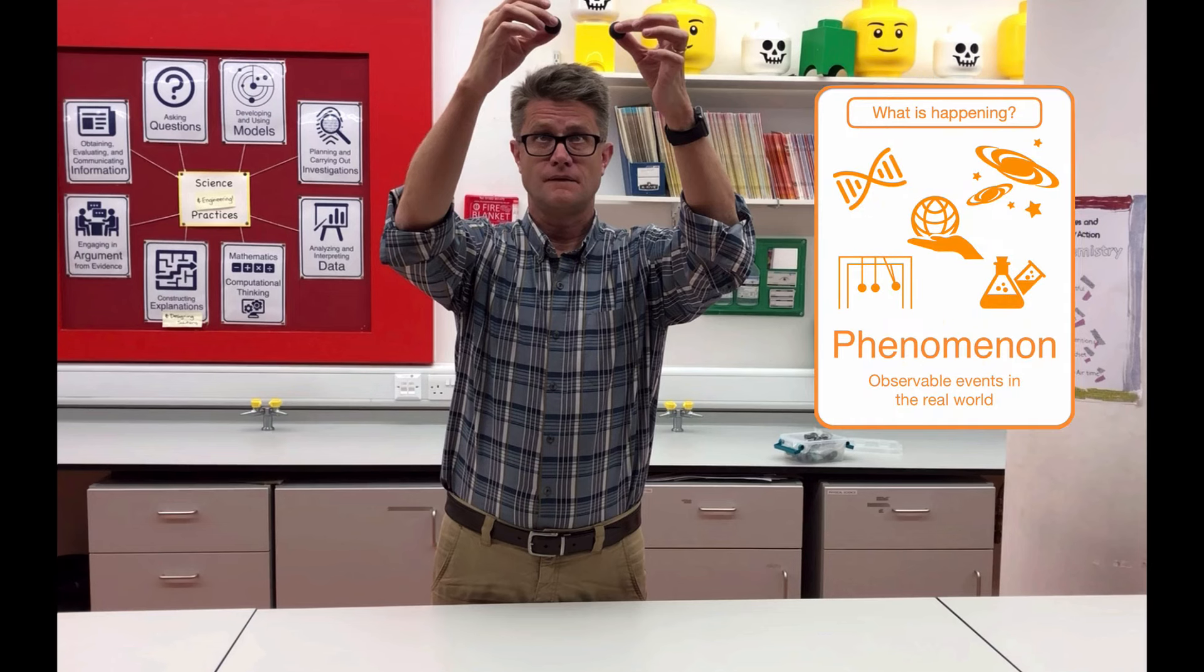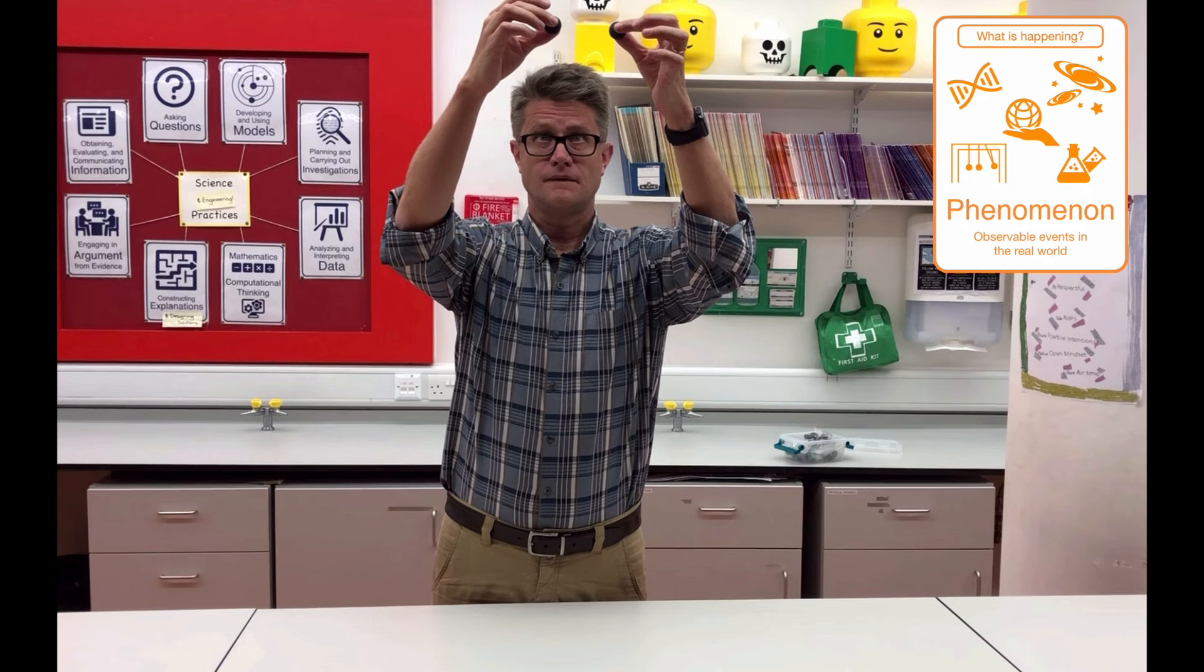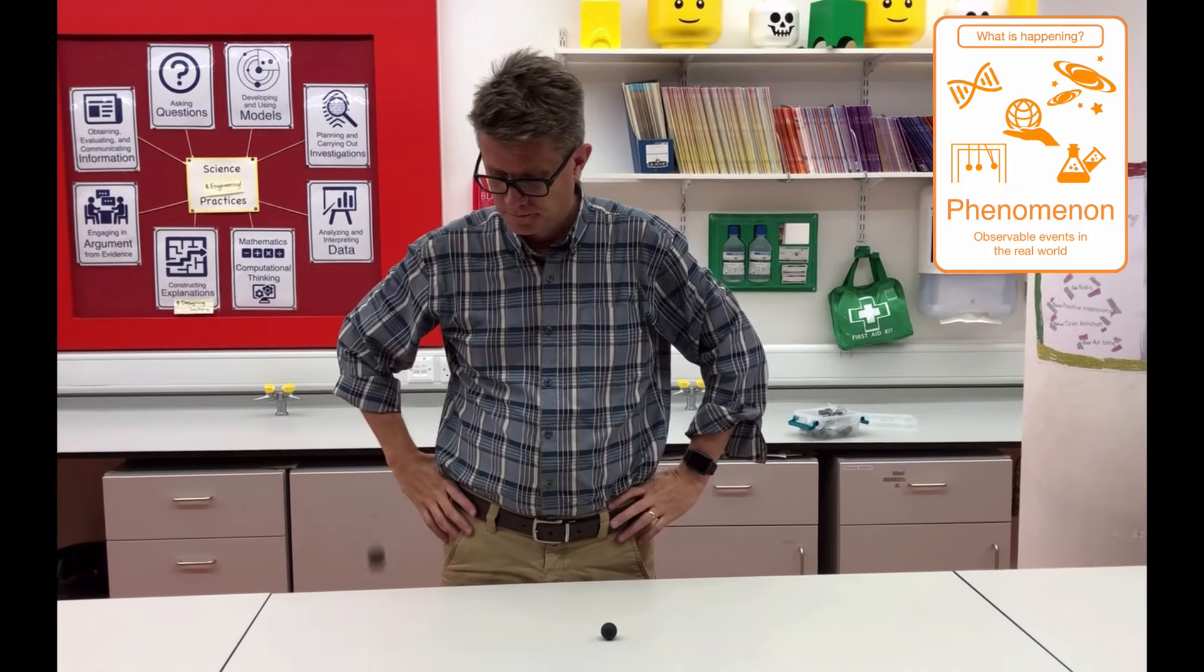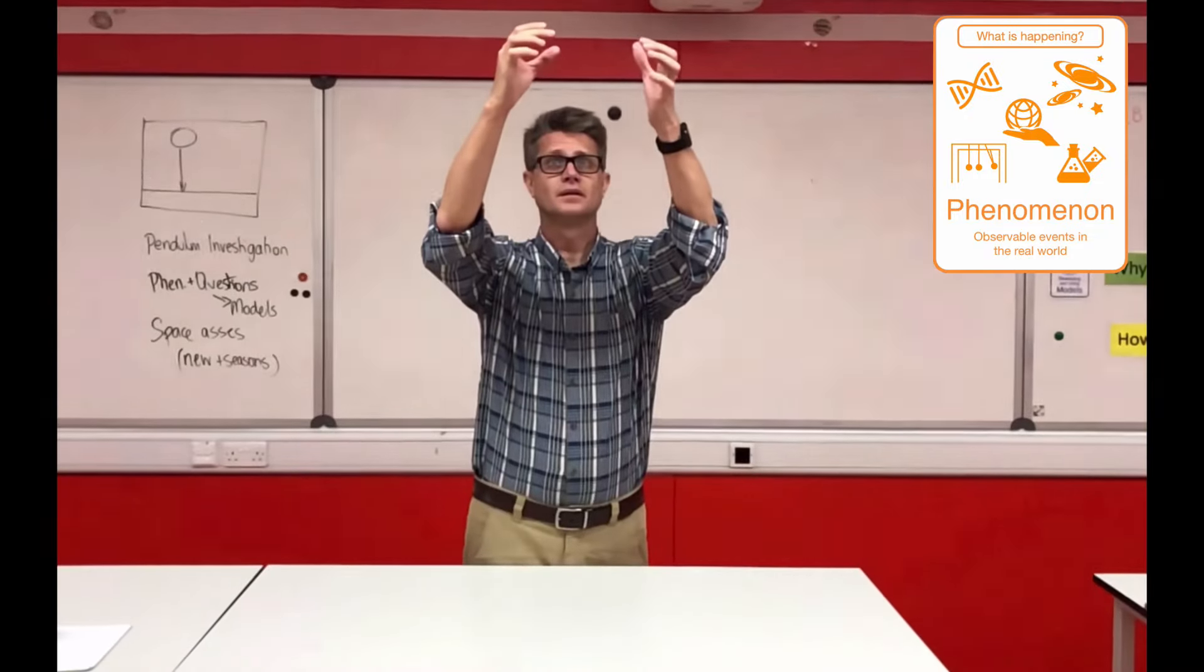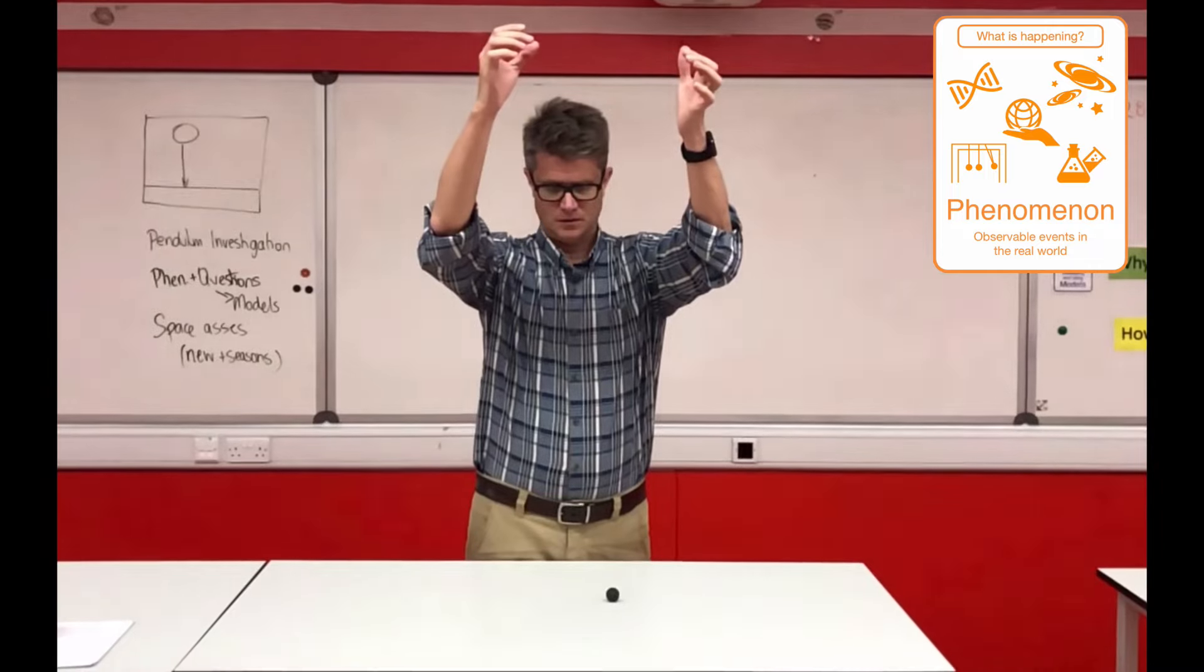But when you drop them on a surface you get this odd behavior. And so what we now have is a phenomena. A phenomena is something that's going to allow me to teach energy, especially energy in collisions. But they're going to discover that through the inquiry process. A phenomena, don't overthink it, it's simply an observable event in the natural world. In this case it's these two objects falling on the table. When they hit the table one of them stops and the other one keeps bouncing. At that moment the students will just start asking questions naturally.